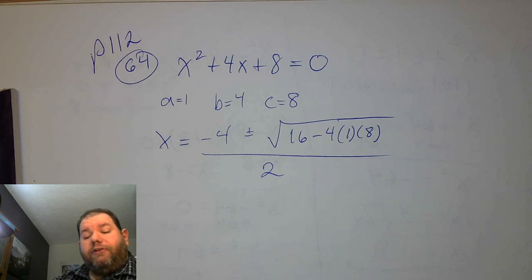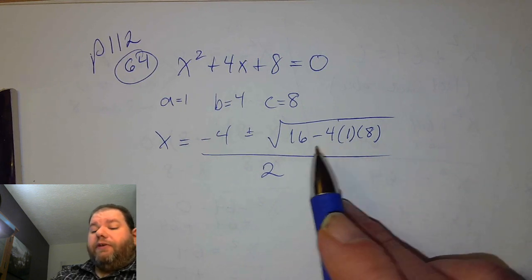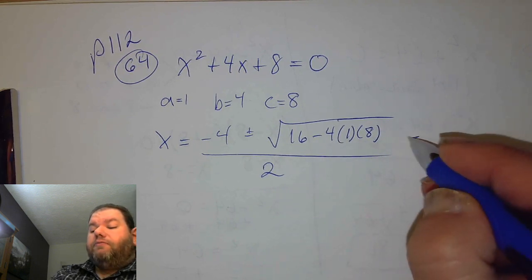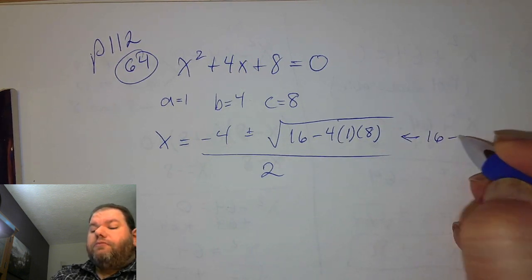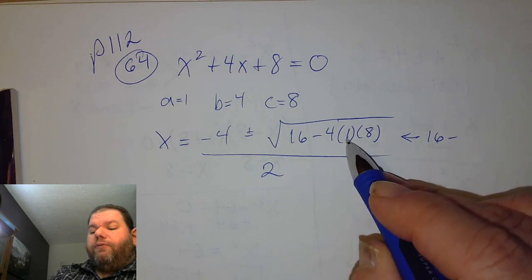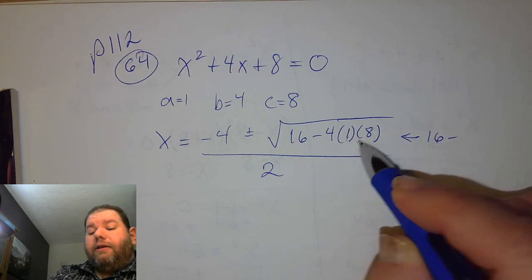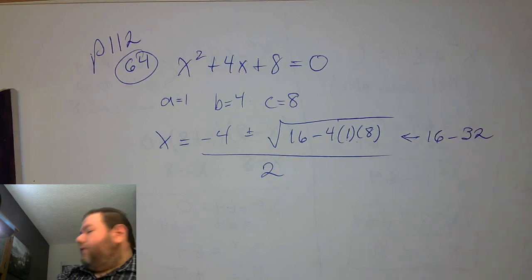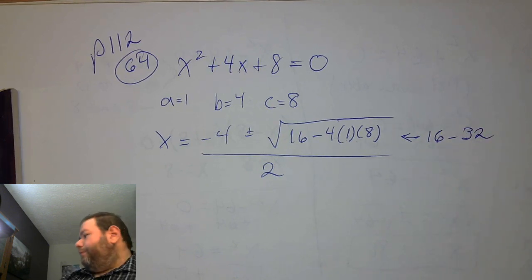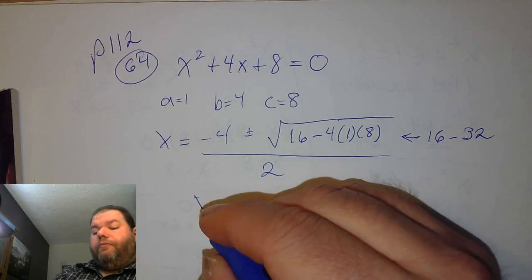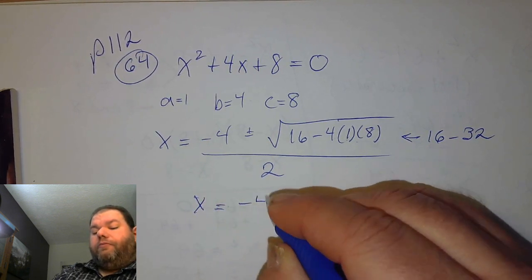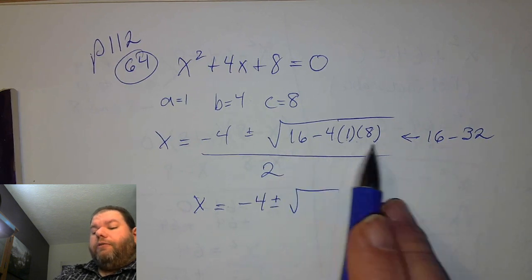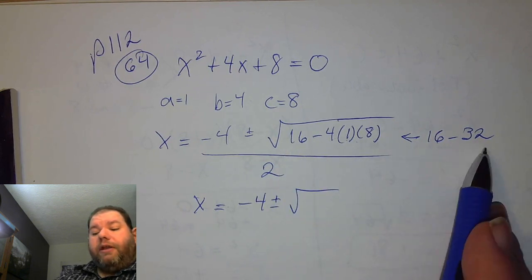We resolve what's underneath the square root first: 16, minus 4 times 1 times 8. 4 times 1 is 4, times 8 is 32. So we end up with 16 minus 32 under the square root. Completing that subtraction, we end up with negative 16.